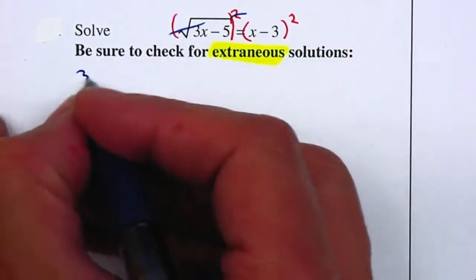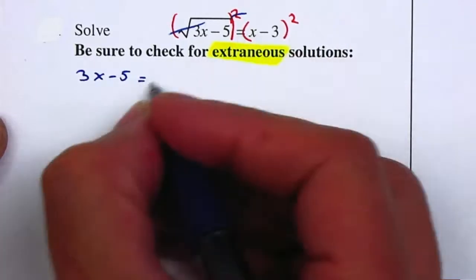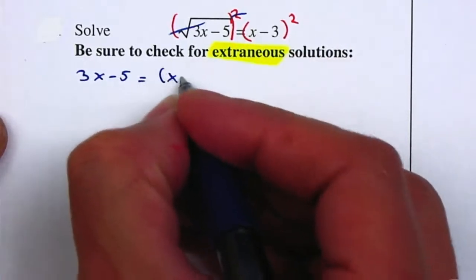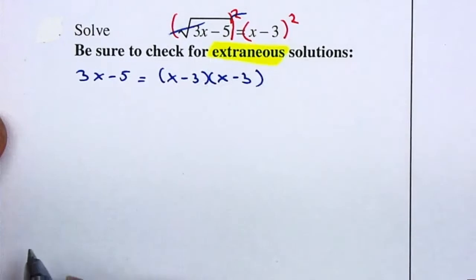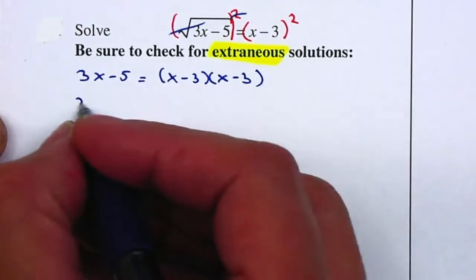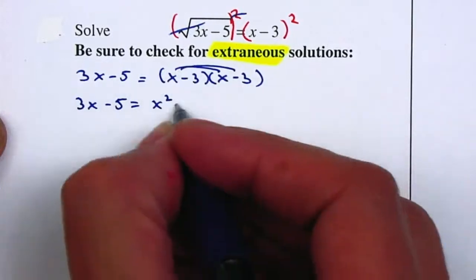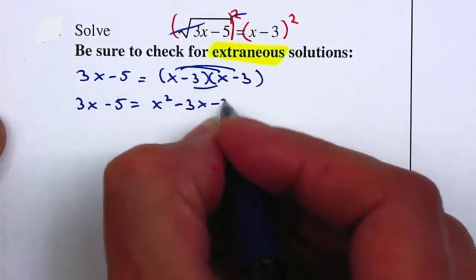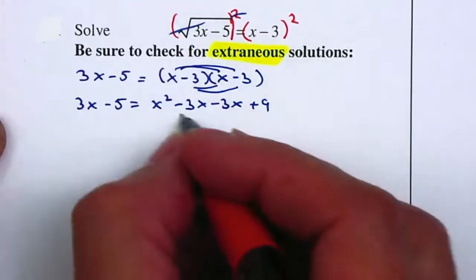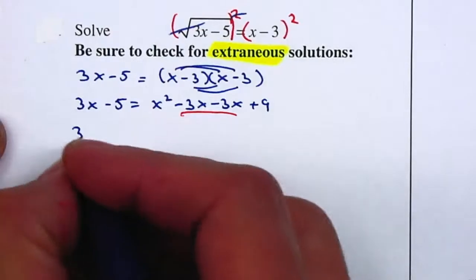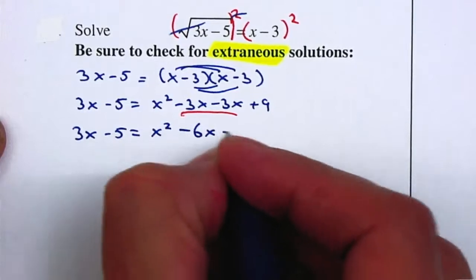So on the left hand side, I'm just going to end up with 3x minus 5. On the right hand side will be x minus 3 squared which is x minus 3 multiplied by x minus 3. Now I'm going to multiply this out. It gives me 3x minus 5 is equal to x squared minus 3x minus 3x plus 9. I'm going to combine like terms. That gives me 3x minus 5 is equal to x squared minus 6x plus 9.